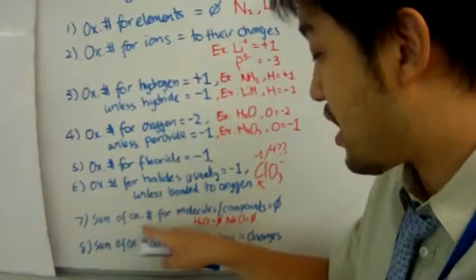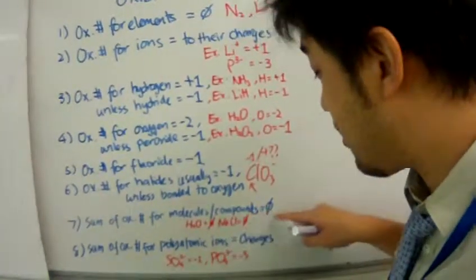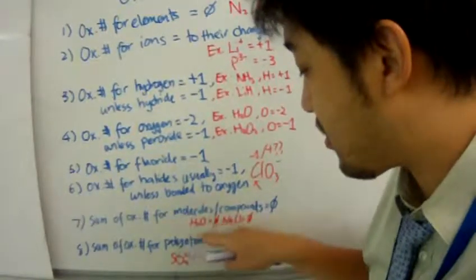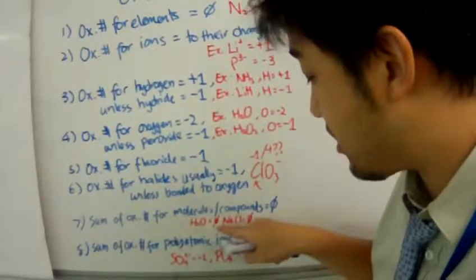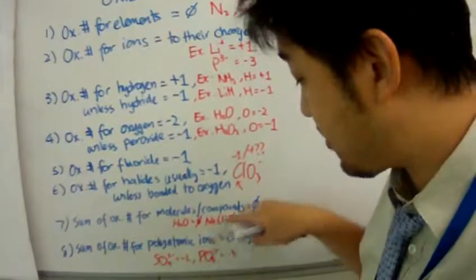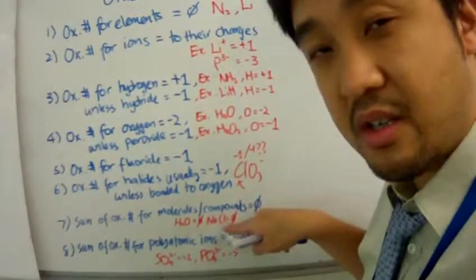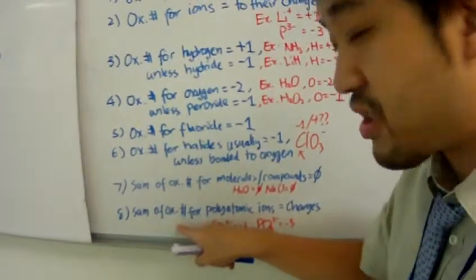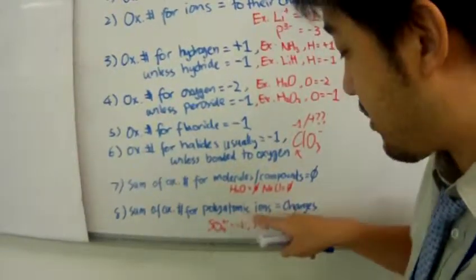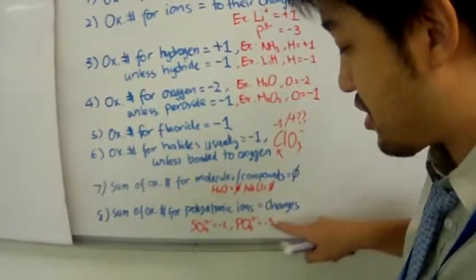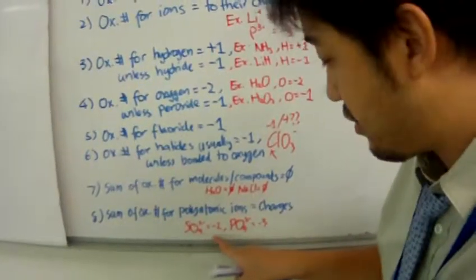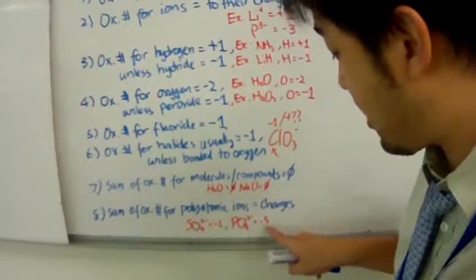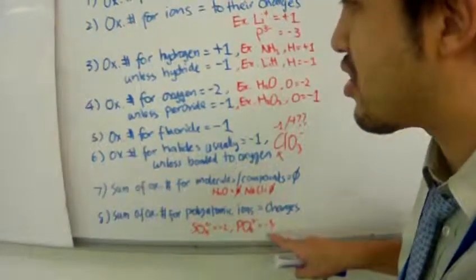The sum of the oxidation numbers for entire molecules or compounds is always equal to zero. For example, the sum of oxidation numbers for water is zero, and for salt is zero. Finally, the sum of the oxidation numbers for polyatomic ions equals their charge. So, for example, the entire sulfate will have an oxidation number of minus two, and the entire phosphate will have an oxidation number of minus three.